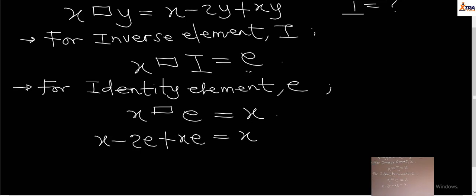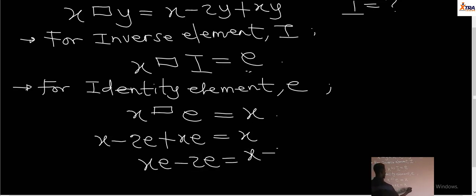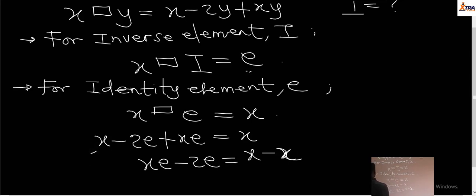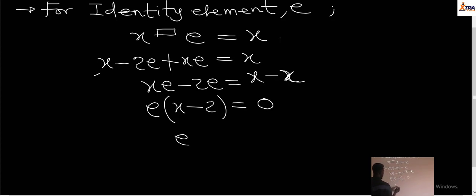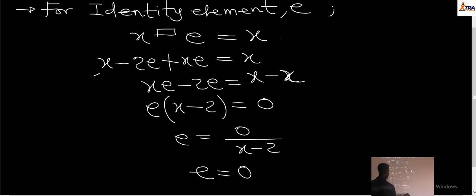Factorizing E, we have E times (X minus 2) equals zero. So E equals zero divided by (X minus 2). Since zero divided by anything gives zero, our identity element for this operation is E equals zero. But this is not the final answer — it is just a step in the process.